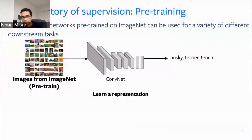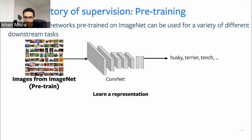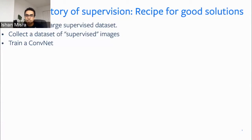Like Dhruv mentioned, the success story of supervision is really well-known. In computer vision, you take images from ImageNet, train a ConvNet to classify a bunch of dog classes, and learn a representation. It's not really about just solving ImageNet — what has been really successful is that when you do this learning on ImageNet, the pre-trained features from the ConvNet are very useful for downstream tasks. The standard recipe: pre-train on a large supervised dataset like ImageNet or even larger datasets, learn a feature representation, and then transfer to any downstream task — object detection, VQA — where you have a smaller amount of supervision.